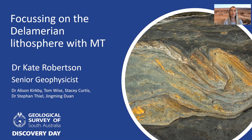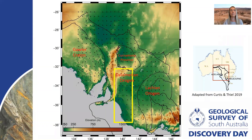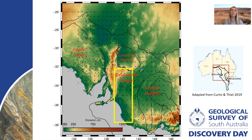I'd like to acknowledge my co-authors who've contributed to this work. The figure on the right shows the area of the Delamerian orogen outlined in black, and yellow is the area that we at the Geological Survey are focusing on as part of our MinX CRC collaboration. I encourage you to check out Tom Weiser's talk about why we've chosen to focus on this area and the drilling we'll be doing as part of the National Drilling Initiative.